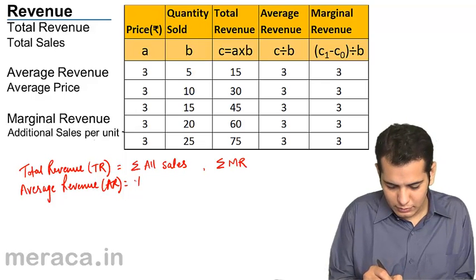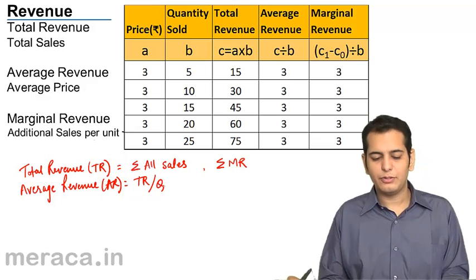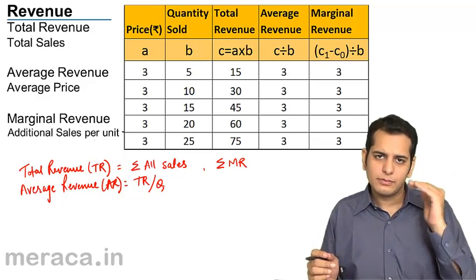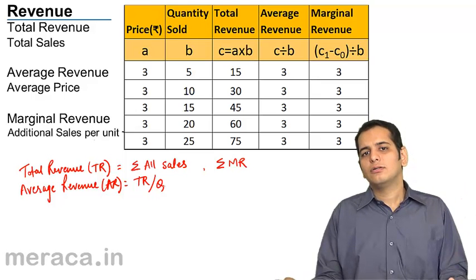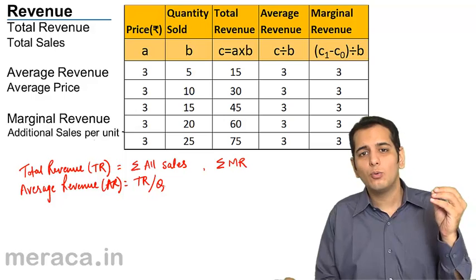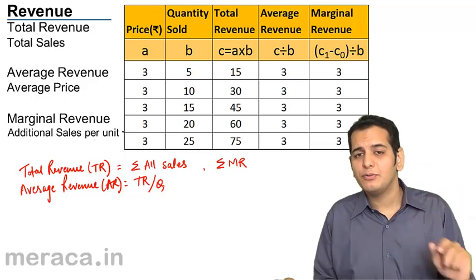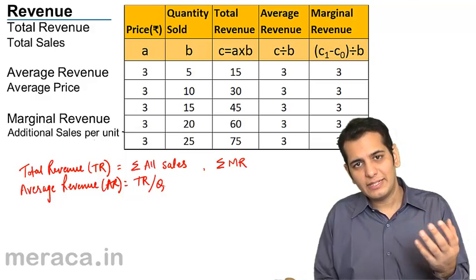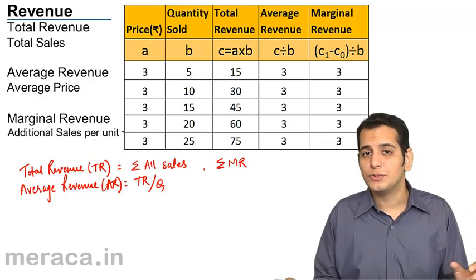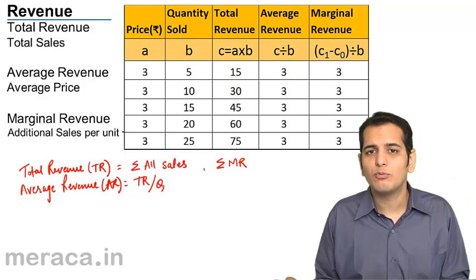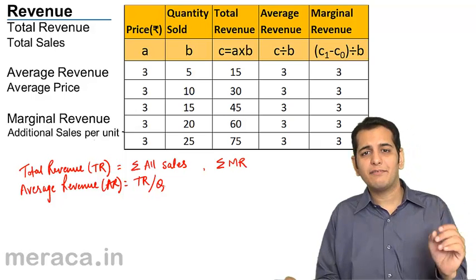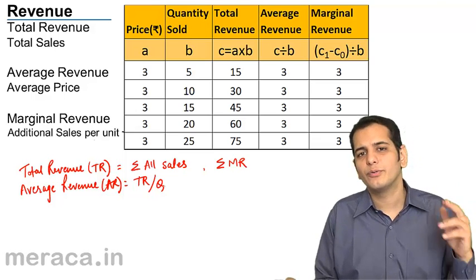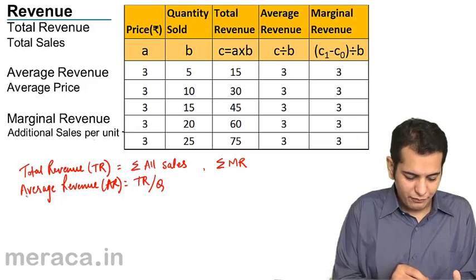Average revenue: AR equals TR divided by Q — the sum total of all revenue divided by the total number of units sold gives you the average revenue earned per unit. For example, if your total revenue from selling 10 units of a good is 1000 rupees, the average revenue will be 1000 divided by 10, which is 100 rupees. This is how you calculate average revenue.